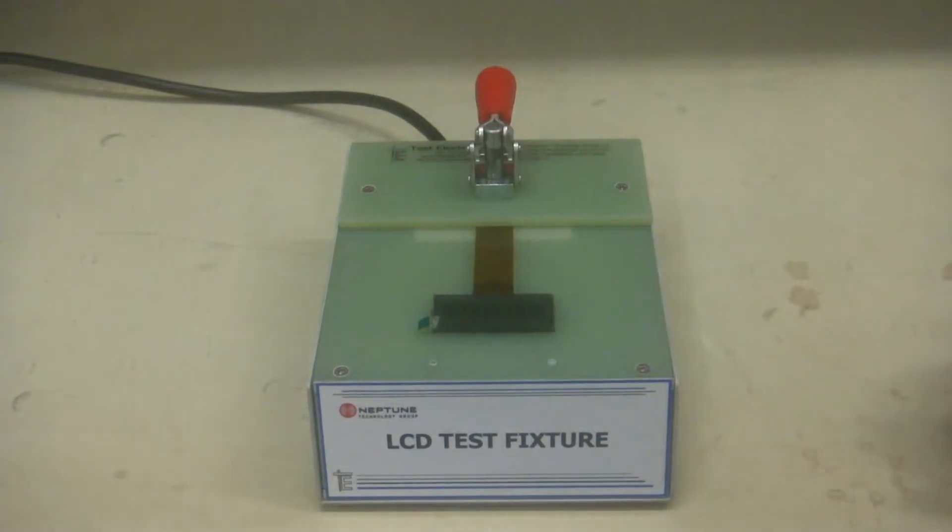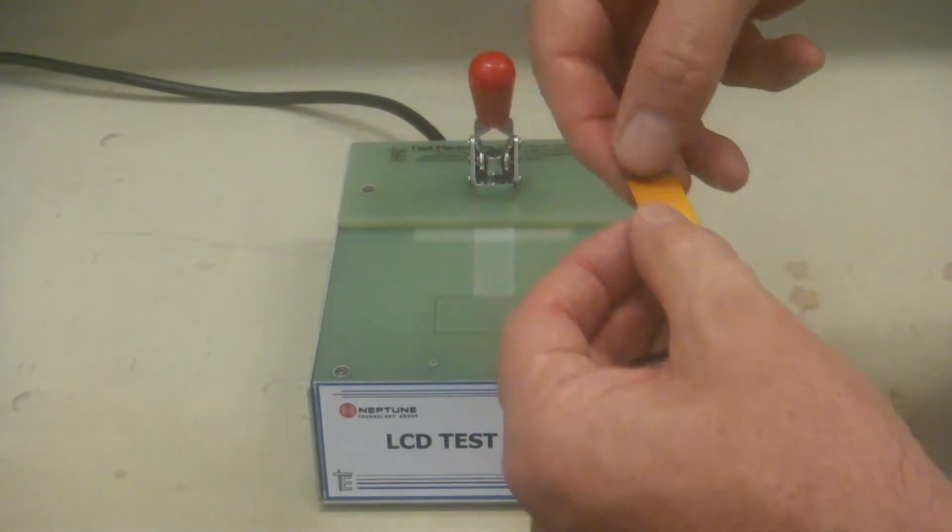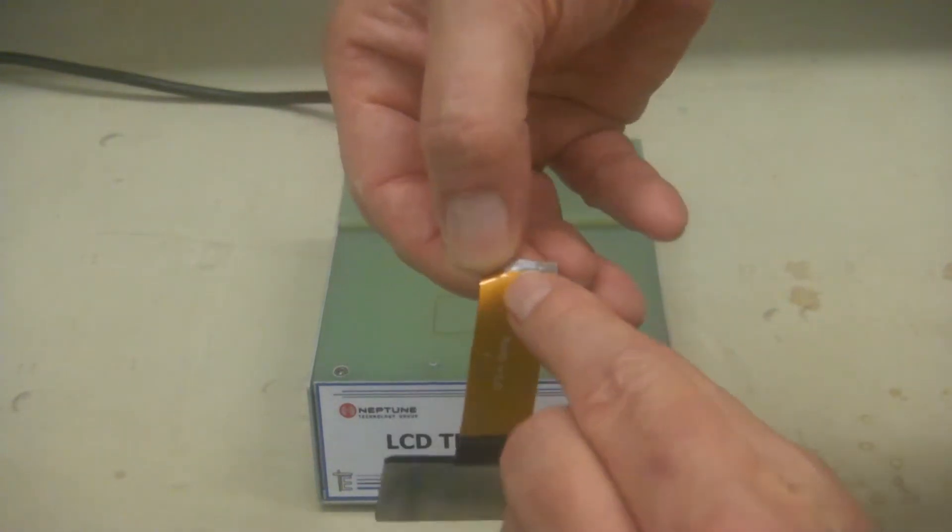To pull up a bed of nails up under inside this test fixture to make contact with the ends of this LCD display in order to test this LCD display. Now these ends are, if you can see this,